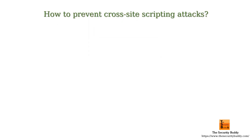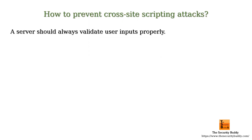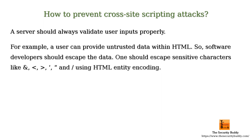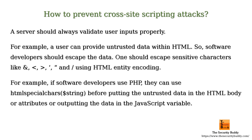How to prevent cross-site scripting attacks? A server should always validate user inputs properly. For example, a user can provide untrusted data within HTML, so software developers should escape the data. One should escape sensitive characters using HTML entity encoding. For example, if software developers use PHP, they can use the function htmlspecialchars before putting the untrusted data in the HTML body, attributes, or outputting the data in a JavaScript variable.